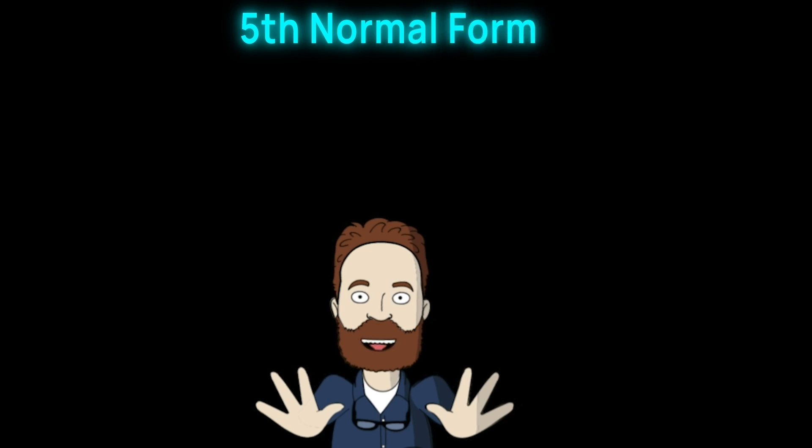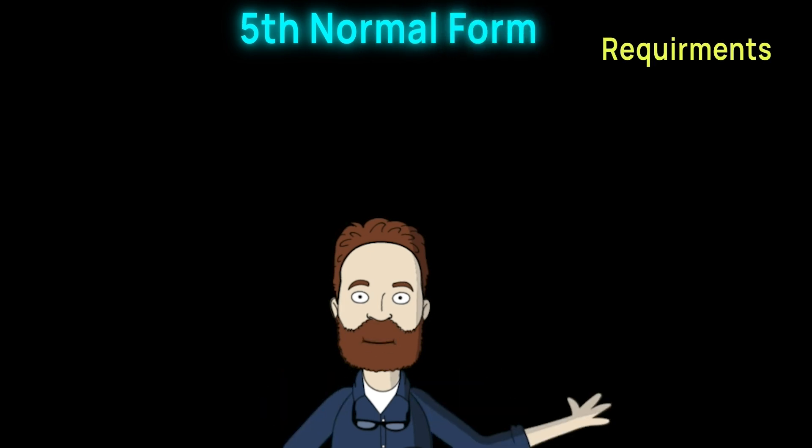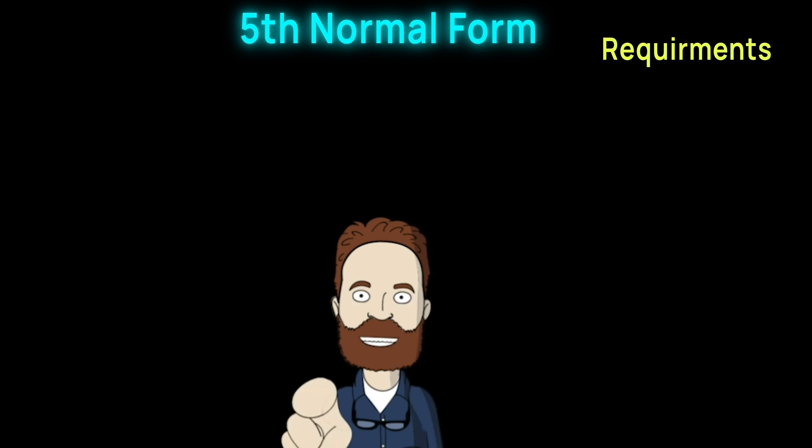For the fifth normal form, first of all, all previous normalization forms—1, 2, 3, and BCNF—must be satisfied.